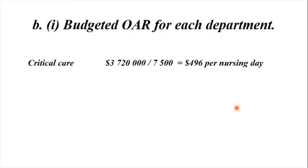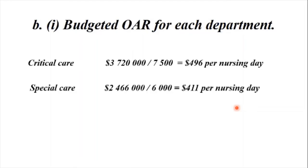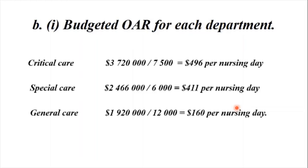Patient Roxy Gardner spent eight days in critical care and 12 days in special care during March 2008; the remainder of the 31-day month was spent in general care — so she used all three departments. Calculating the budgeted overhead rate: critical care — $3,720,000 ÷ 7,500 days = $496 per nursing day; special care — $2,466,000 ÷ 6,000 days = $411 per nursing day; general care — $1,920,000 ÷ 12,000 days = $160 per nursing day.